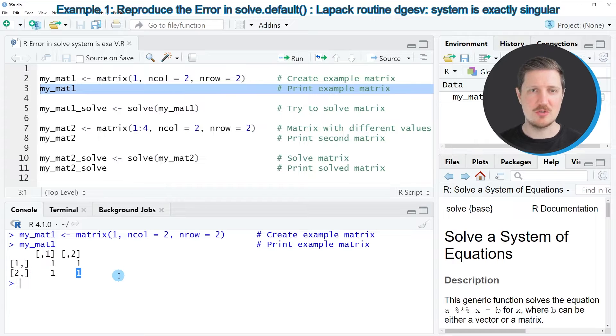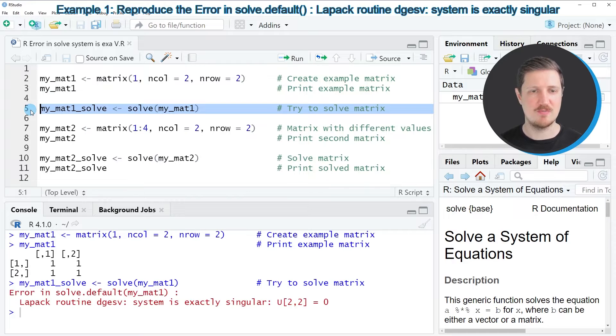If you now try to apply the SOLVE function to this matrix as you can see in line 5 of the code, the error message 'ERROR IN SOLVE DEFAULT LAPAC ROUTINE DGESV SYSTEM IS EXACTLY SINGULAR' is returned, and the reason for that is that we are not able to solve an exactly singular matrix as in our case.